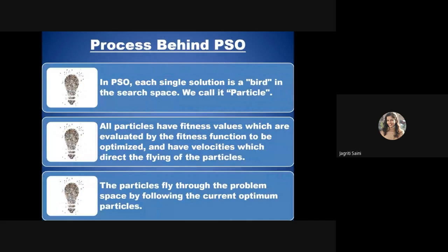In PSO, a single solution — called a bird in nature — is called a particle. All particles have some fitness value, just as birds have fitness values determining how much information they can retain about the food source and how far they can fly. In the optimization sphere, particles have attributes that define their fitness conditions depending on the problem.